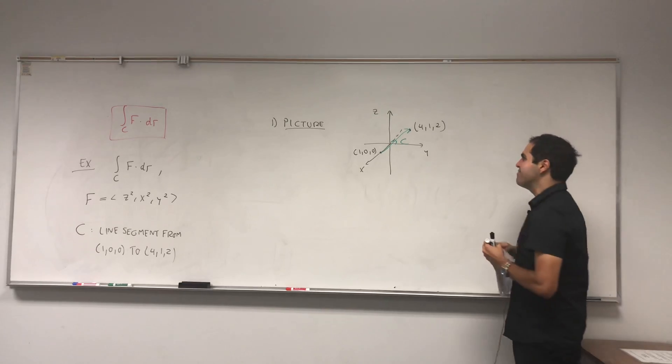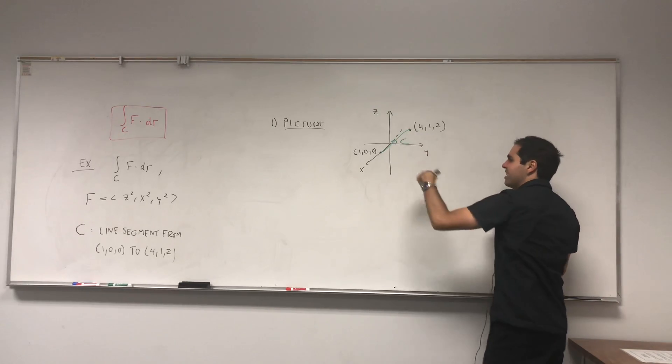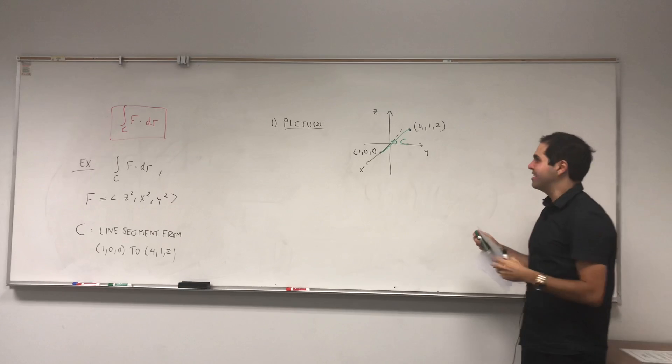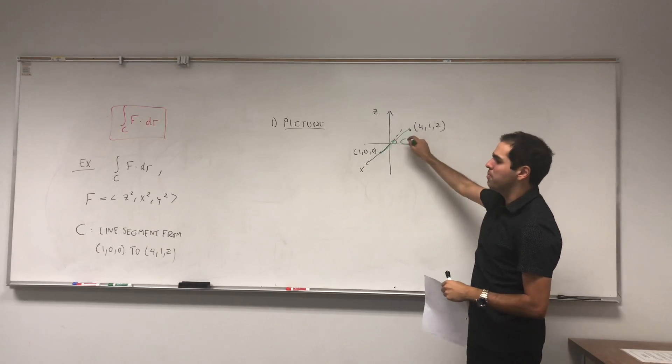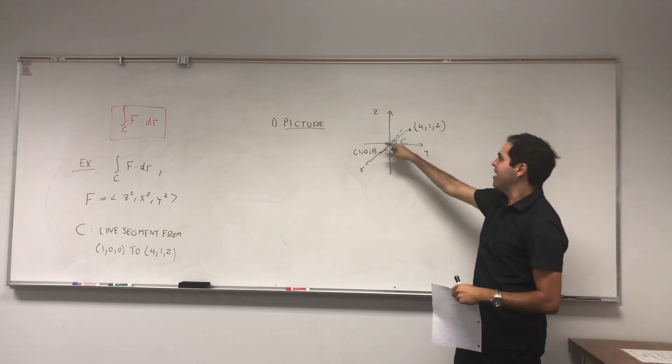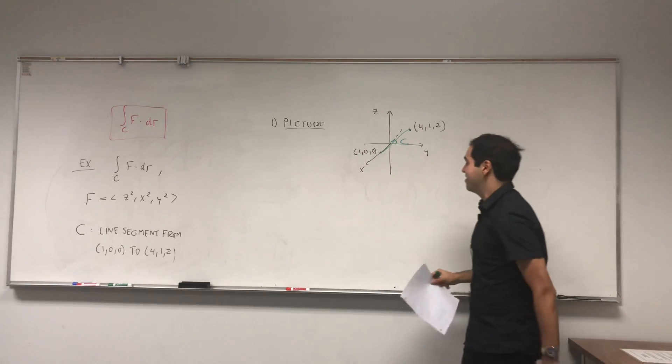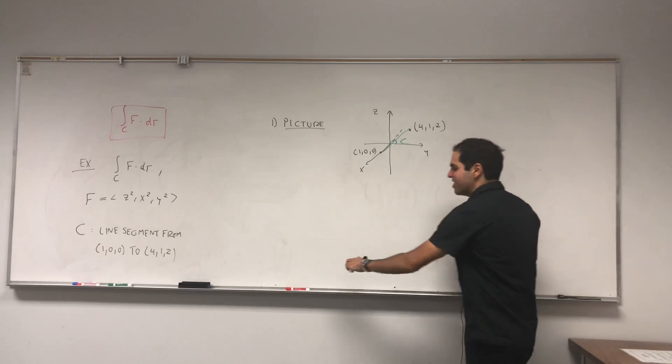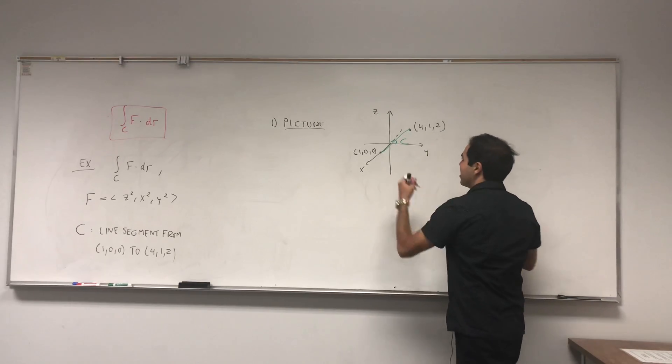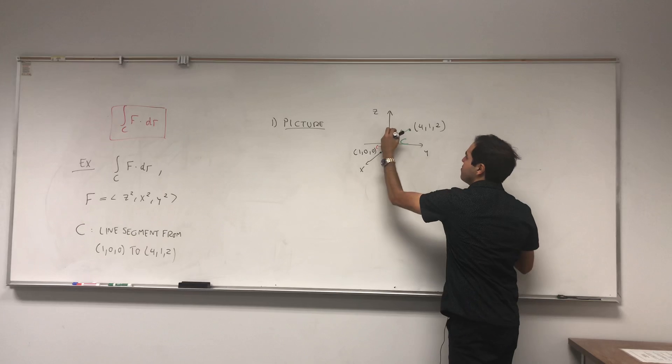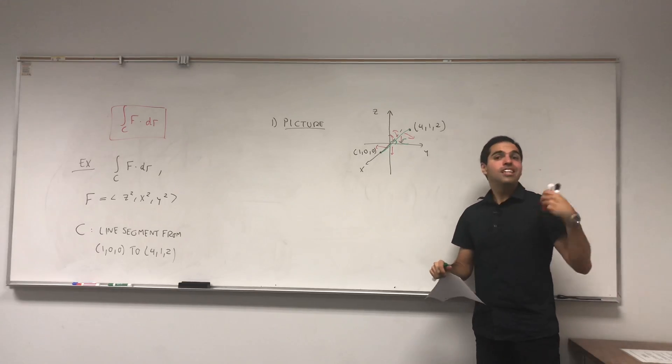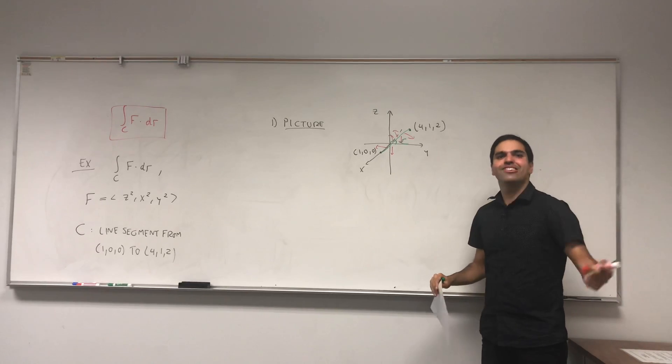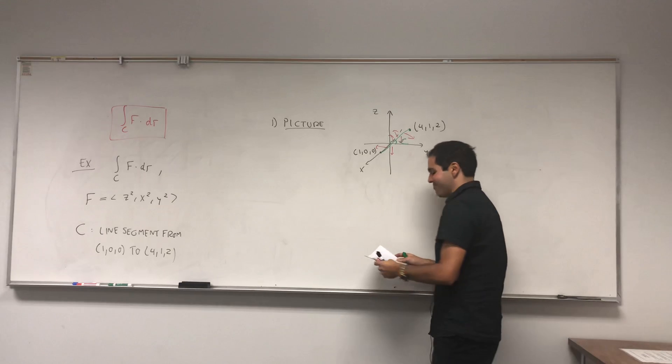And we have this segment C here, just a line segment connecting the two points in this direction. And again, directions are important. Essentially, and I'll talk more about that in a second, what you want to do is sum up the values of those vector fields over this segment C. In other words, you have a bunch of arrows pointing everywhere. Essentially, you want to sum up all those arrows, which doesn't make sense, but it turns out there's a way of making it make sense.